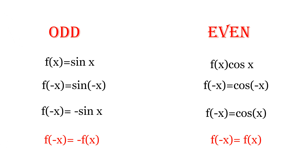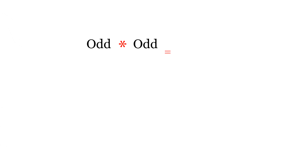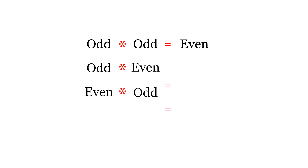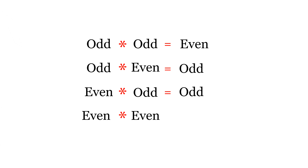When one odd function is multiplied by another odd function, the result is an even function. When one odd function is multiplied by one even function, the result is always an odd function. If two even functions are multiplied, you get an even function. For example, x³ is an odd function and sine(x) is also an odd function, so their product x³·sine(x) is going to be an even function.